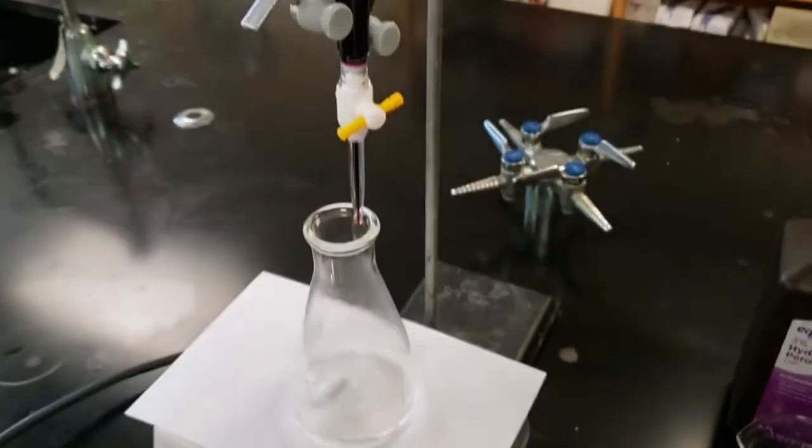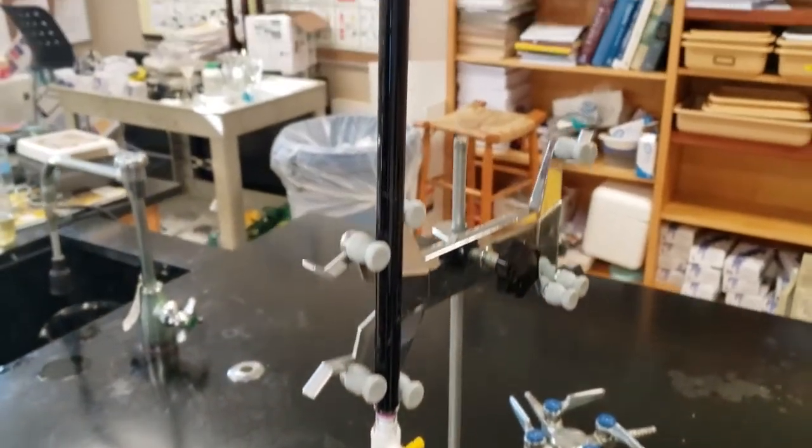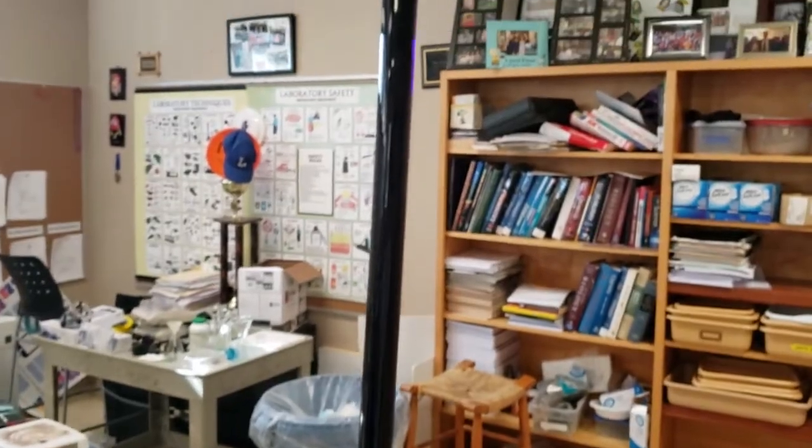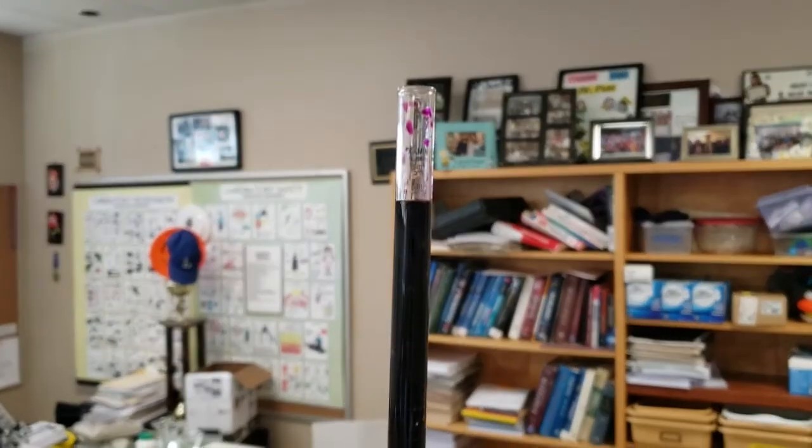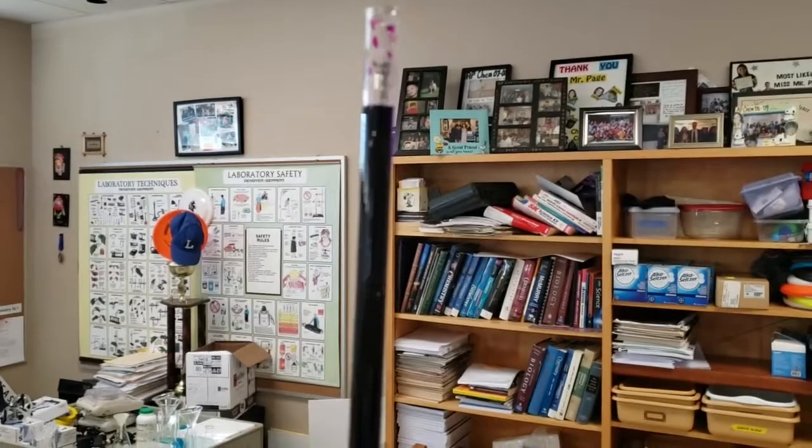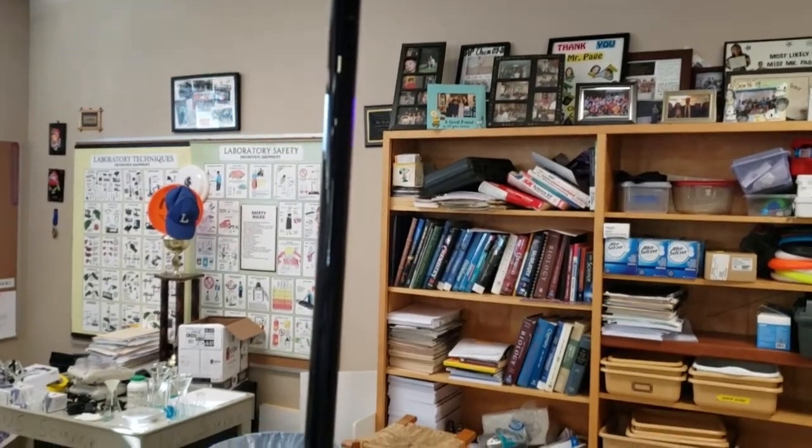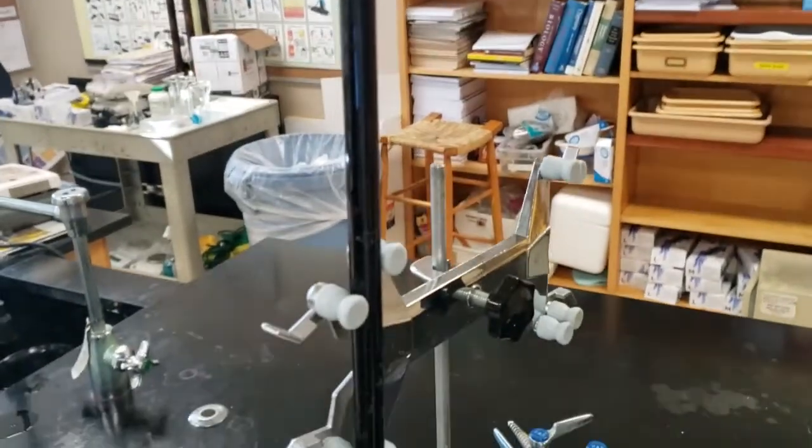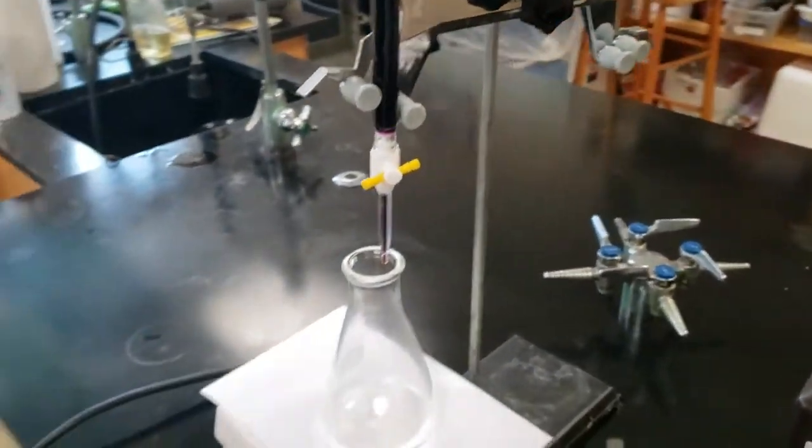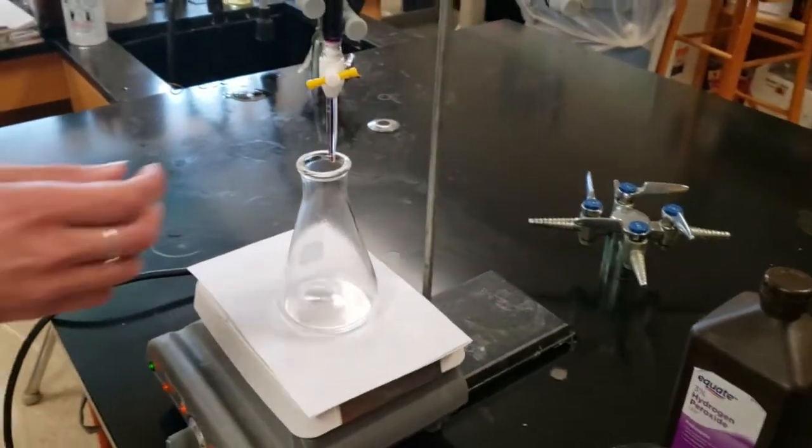In the burette, you have it filled and also burped, so all the air is out of it. And it's lowered down to right at the zero mark. The potassium permanganate is super dark, it's almost opaque. So in this case, we may want to read the top of the meniscus only because we can't see the bottom. As long as you're consistent, it won't matter.